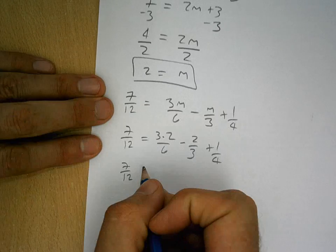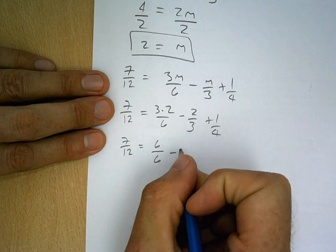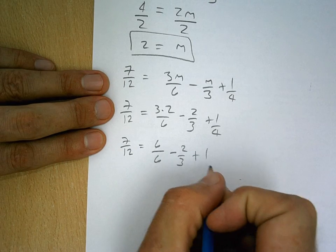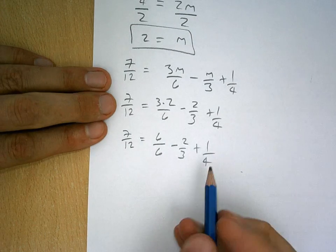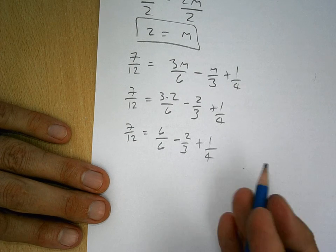I've got 7/12s over here equals 6 divided by 6 minus 2/3 plus 1/4. And this actually is a little clunky because I have fractions that are obviously different denominators, but that's okay.